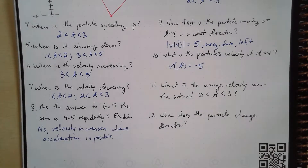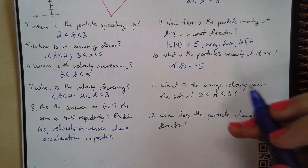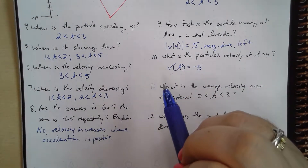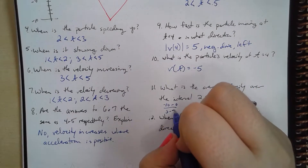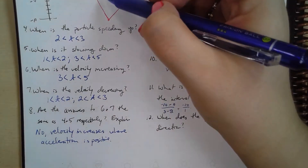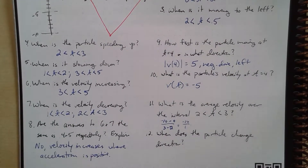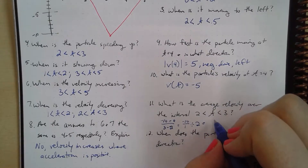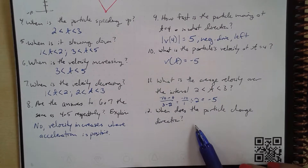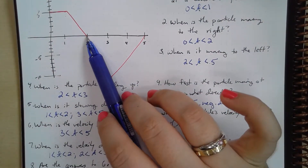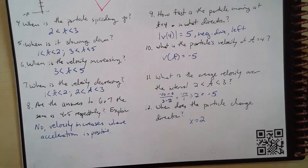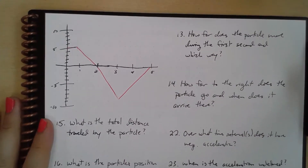What's the average velocity over the interval from 2 to 3? Taking (−10 − 0) / (3 − 2) = −10 over 1, and dividing by 2 time points gives an average velocity of negative 5. When does our particle change direction? We can see the particle changes direction at t = 2, where it goes from positive (rightward) to negative (leftward) direction.